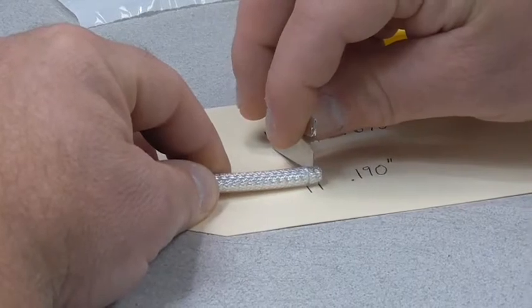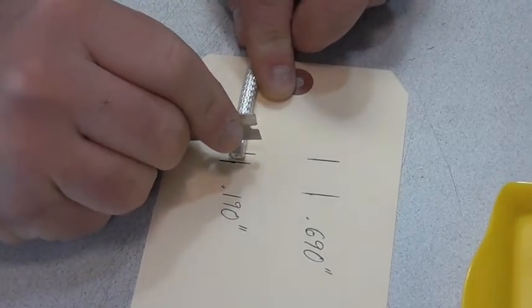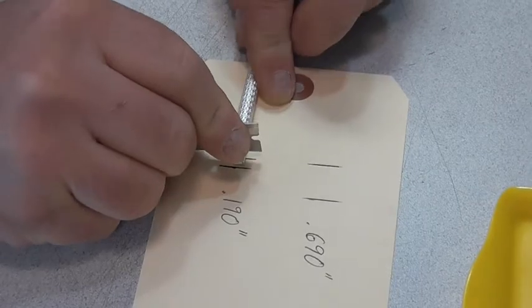Score the jacket at cut A and cut B using the strip dimensions on screen, without cutting into the cable shields.